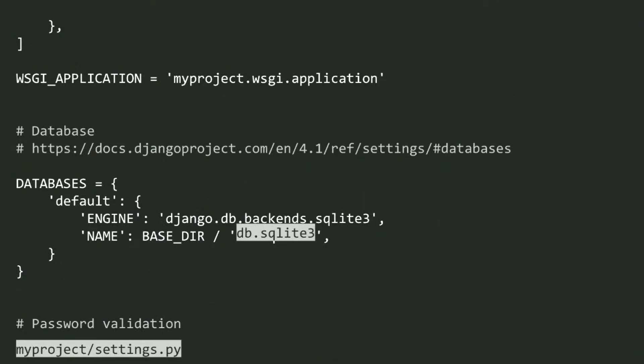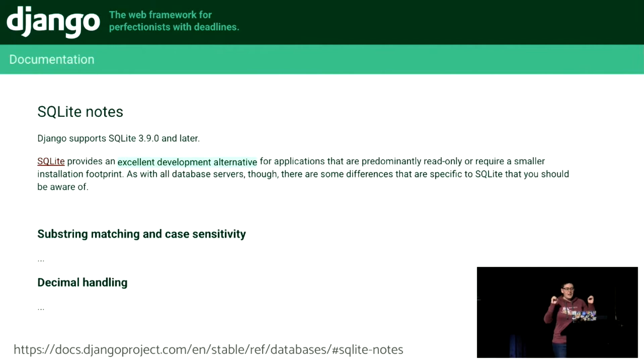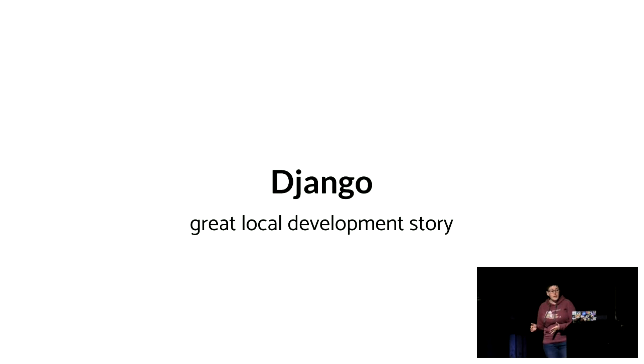We can also see the databases setting with db.sqlite3 in there. But what's this sqlite3 thing? The documentation says that SQLite is an excellent development alternative — very good for applications that are predominantly read-only or require a smaller installation footprint. Again, that word: development. Django has a very good local development story, and you saw just how quickly we got it all working on our local machine.